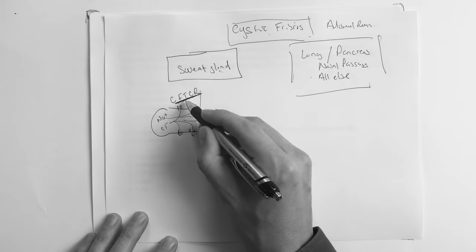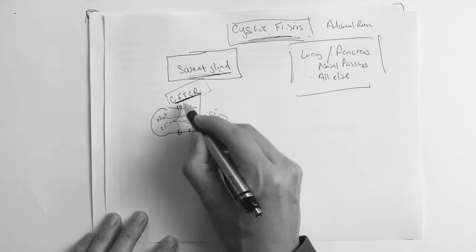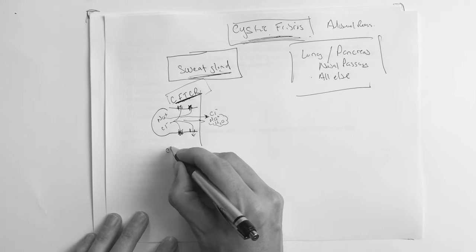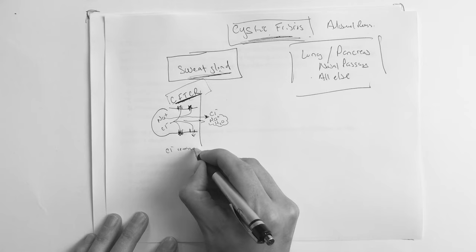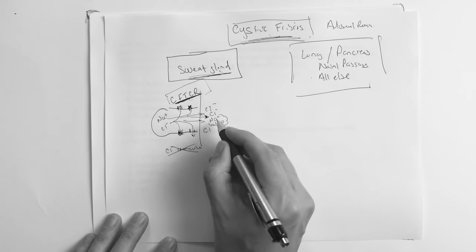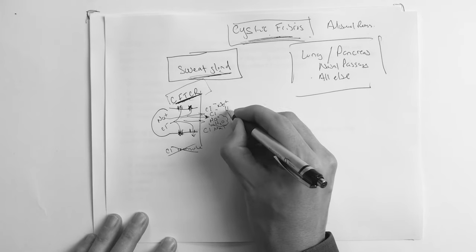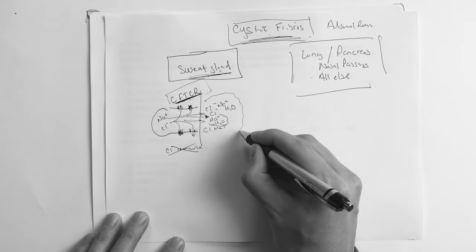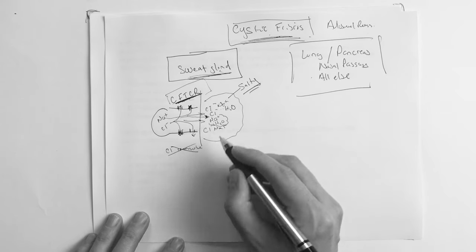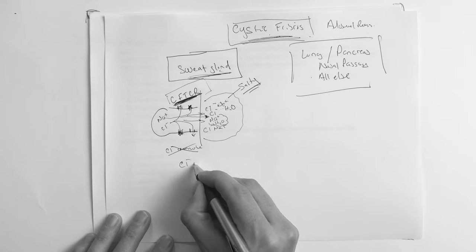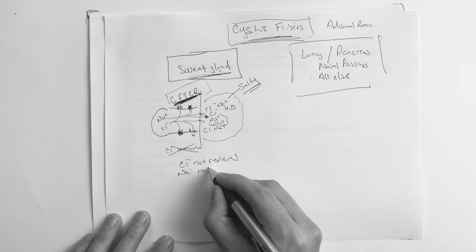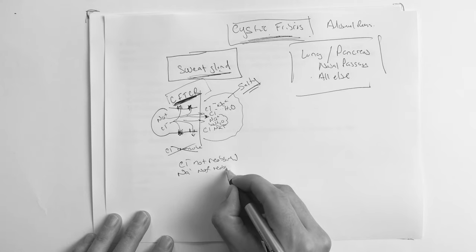And then of course where sodium goes, water follows. So that's normal. But when you have a defect with cystic fibrosis in the sweat gland of this guy, then this gets impaired. And so instead of the chloride being reabsorbed, what happens? That doesn't happen, and more of it gets pushed out here. And of course where he goes, sodium's going to follow him. And of course where sodium goes, water follows. So what are you going to see on the surface of the sweat gland? That real salty taste, right? Because you've got sodium and chloride together. So in this sense when there's a defect of the CFTR, chloride not reabsorbed and sodium not reabsorbed. It gets pushed out.